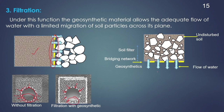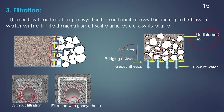For a geosynthetic to act as a filter, it is essential that a condition of equilibrium is established at the soil-geosynthetic interface as soon as possible after installation, to prevent soil particles from being piped indefinitely through the geosynthetics. At equilibrium, three zones may be generated: undisturbed soil, a soil filter layer, and a bridging network. The soil filter layer consists of progressively smaller particles as the distance from the geosynthetics increases, and the bridging layer is a porous open structure. Once stratification is complete, the soil filter layer actively filters the soil particles.